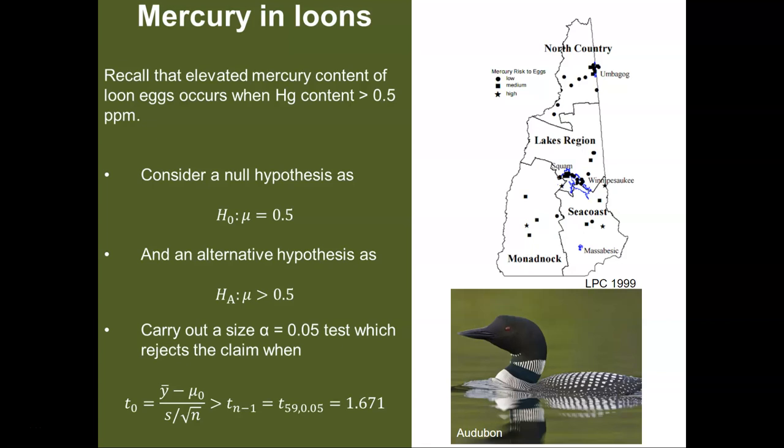That value 1.671 is what we could obtain from a t-table or from software. We're going to show you how to read the t-table to find out that value 1.671. Then we're going to look and see what the answer is. That is, will we reject or fail to reject the null hypothesis that examines the loon-egg mercury content?